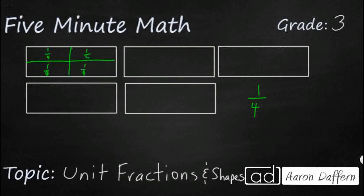Now what if we completely changed it and used diagonal lines? That's one half, and then we take another diagonal line and cut that half in half again — and guess what? We still get unit fractions of one fourth.